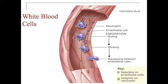Figure 19.8 on page 709 is a cartoon dramatization of the emigration of white blood cells. Adhesion molecules assist in the emigration of white blood cells from the bloodstream into the interstitial fluid. The neutrophil undergoes rolling, then sticking, and then squeezes between the endothelial cells.